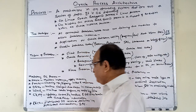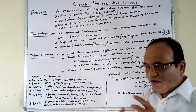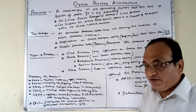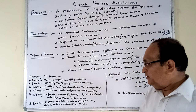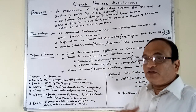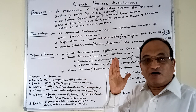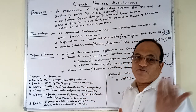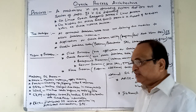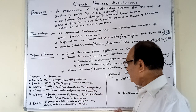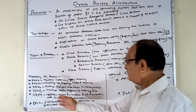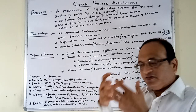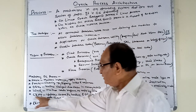The LGWR — Log Writer — process writes redo records to the redo log files. Whenever a user makes a change, history of that change is generated so that in future recovery, the database can be restored to the exact point of failure. This history is stored in redo log files. LGWR is responsible for writing redo log records from the redo log buffer — a memory area — to the redo log files.